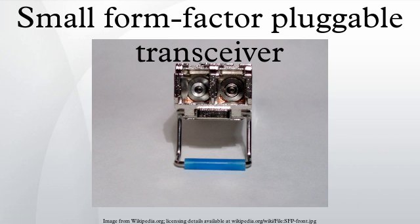CWDM and DWDM transceivers are available at various wavelengths achieving various maximum distances. For copper twisted pair cabling, 1000BASE-T modules incorporate significant interface circuitry and can only be used for Gigabit Ethernet, as that is the interface they implement — they are not compatible with fiber channel or SONET. SFP Plus, the enhanced small form factor pluggable, is an enhanced version of the SFP that supports data rates up to 10 Gbit/s.